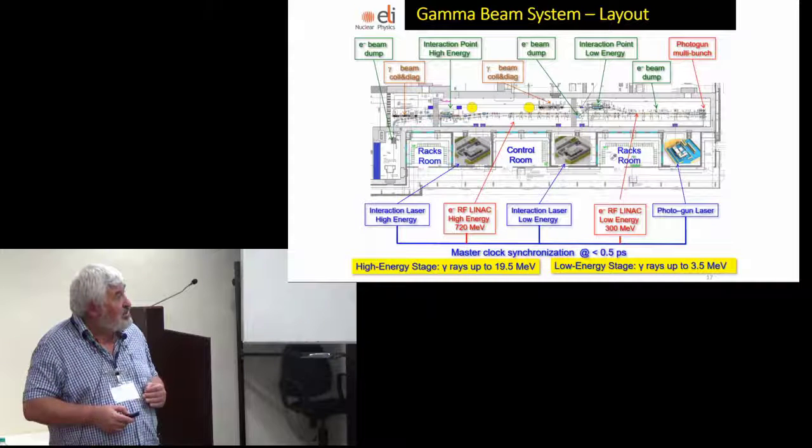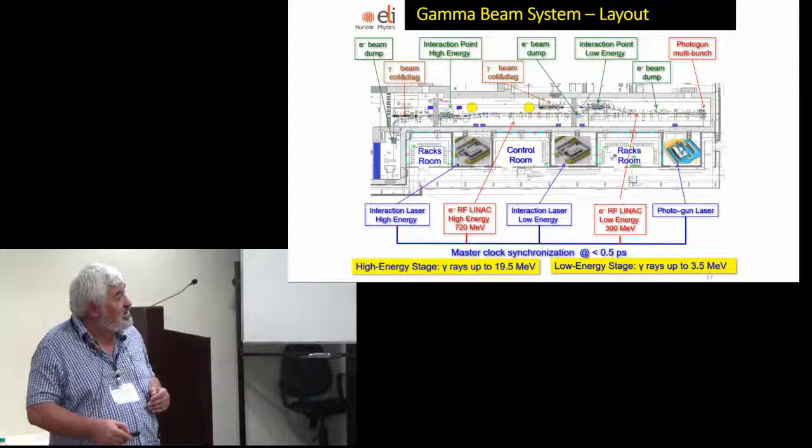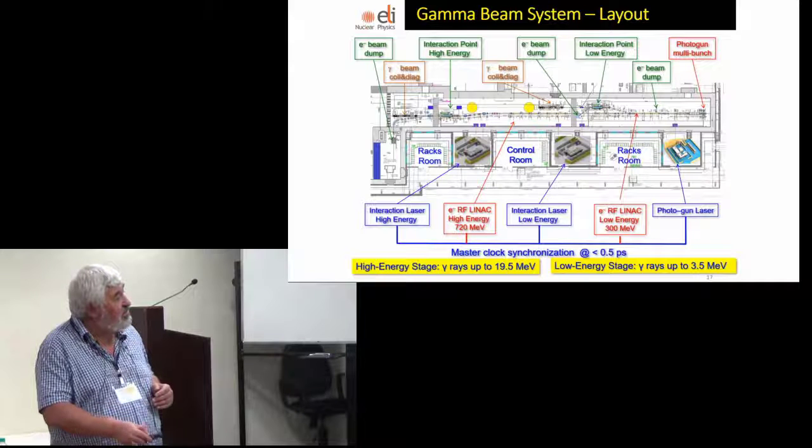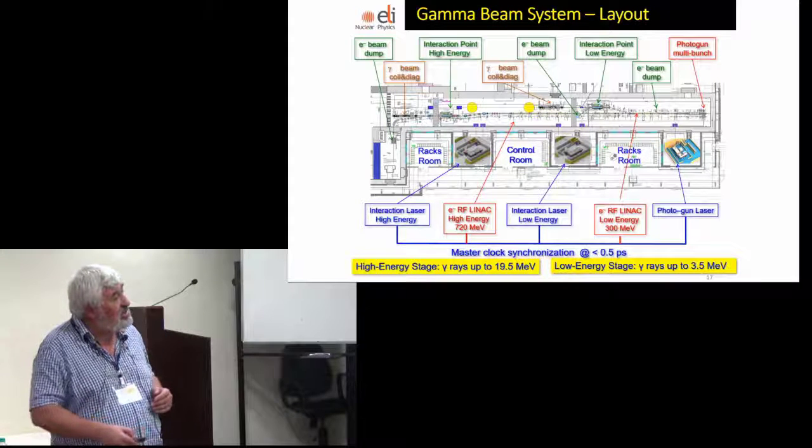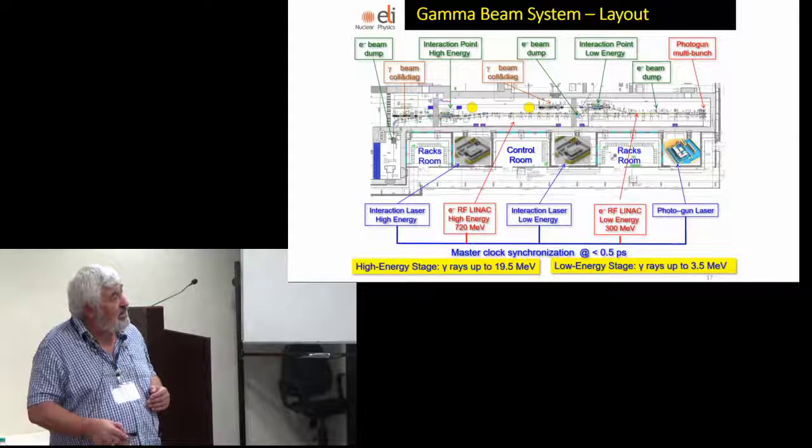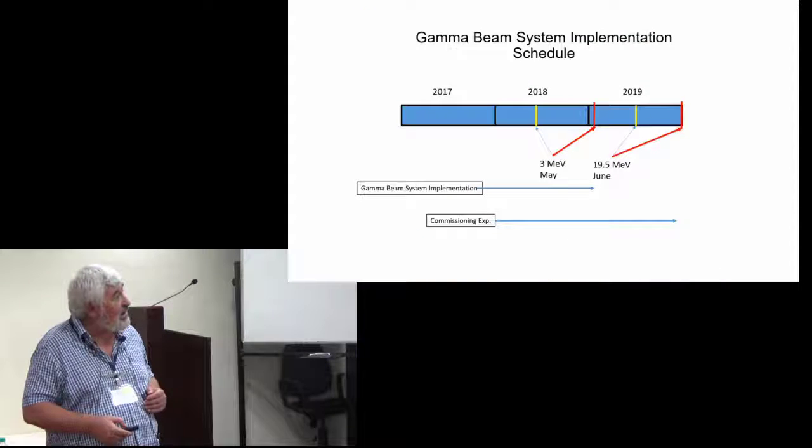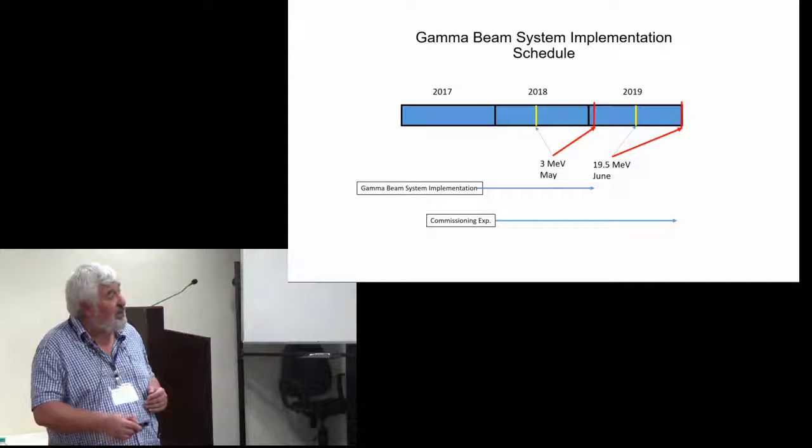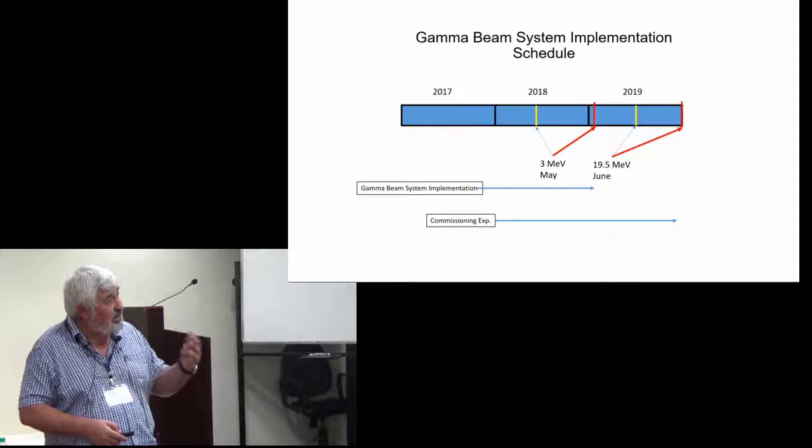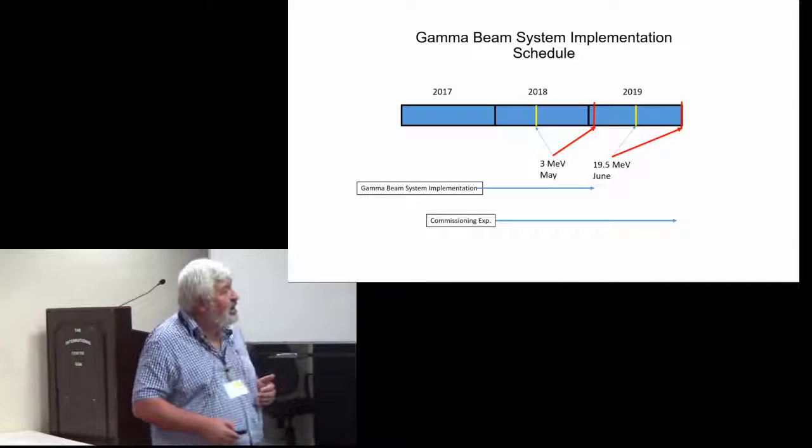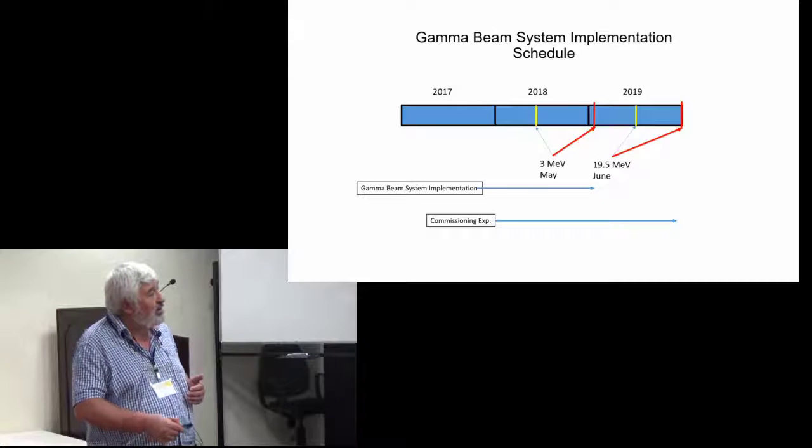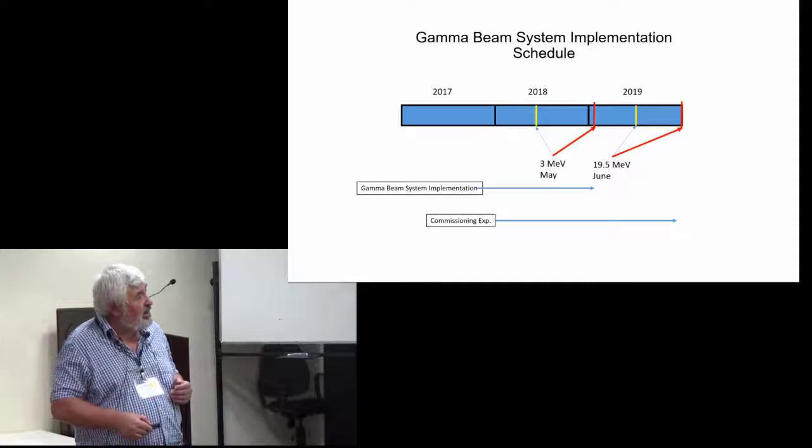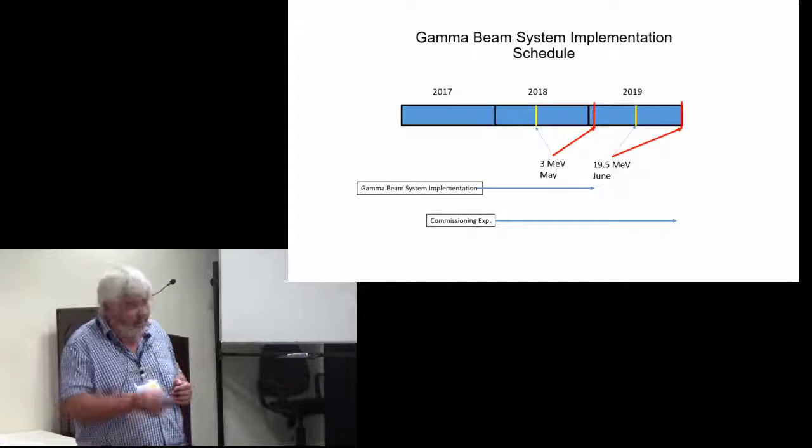I won't go into details, but we'll have two interaction points for low energy and high energy gamma beams. The synchronization between the lasers and electron beam should be better than half a picosecond. I have to be honest that with the gamma beam system we have a huge delay in performance. We have disagreements with the providers, but meanwhile we're preparing commissioning experiments and building experimental equipment. We believe this will be overcome.